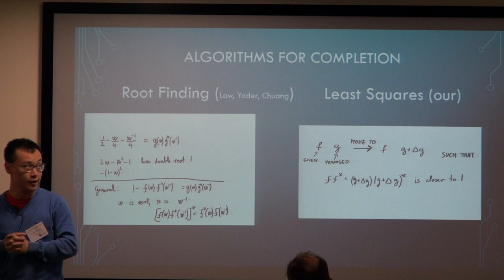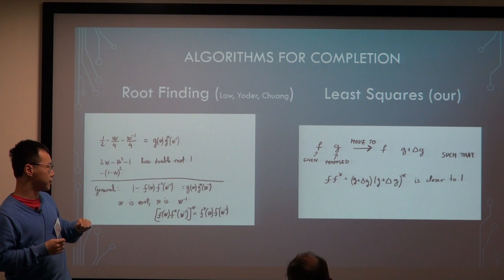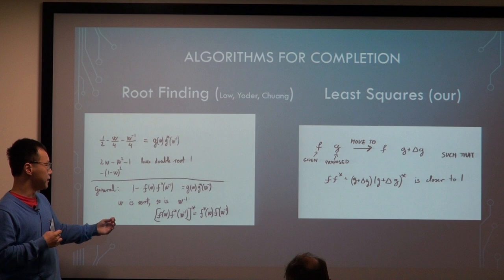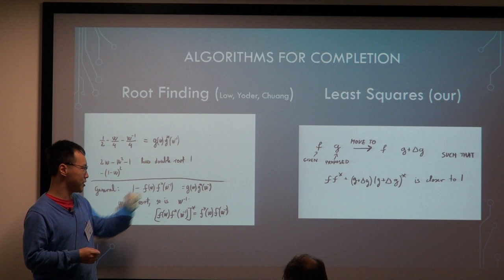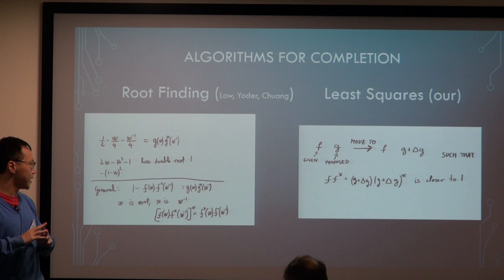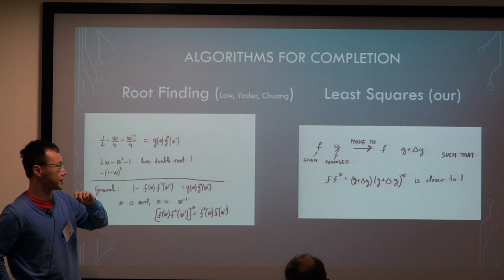So for the completion part, the existing methods first proposed by Lo, Yoder, and Chuang used root finding. Basically, this is a high degree polynomial over complex, and we want to find all the roots of them with high precision, such that we can reconstruct these G parts, which is the other part, the completion part of the unitary.